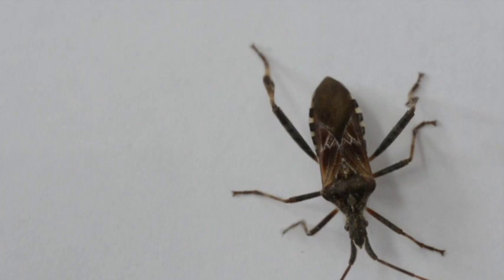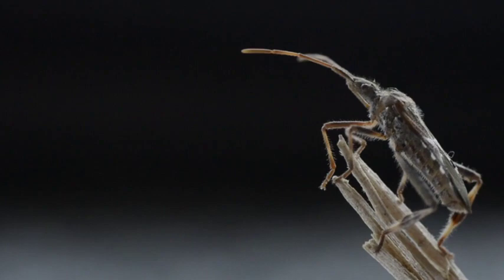Entering through any open cracks and gaps, this sneaky bug often marches its way right into houses. If it manages to remain undetected, the Western Conifer Seed Bug will have found an ideal home for the colder months.